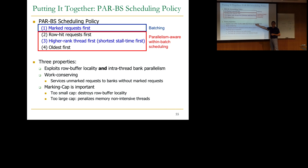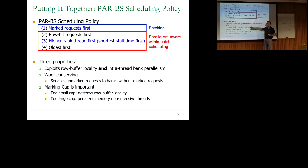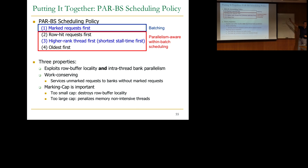There are three properties of this scheduling approach. It exploits row-buffer locality and also intra-thread bank parallelism — though these are at odds with each other, and there's no perfect way of combining them. It's bandwidth-conserving: you service unmarked requests to banks that have no marked requests. And the marking cap is a very important parameter — too small a cap destroys row-buffer locality; too large a cap lets elephants dominate the batch, penalizing the mice.